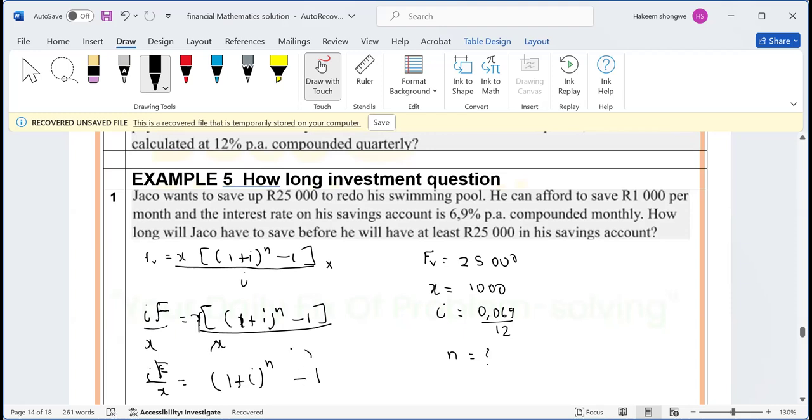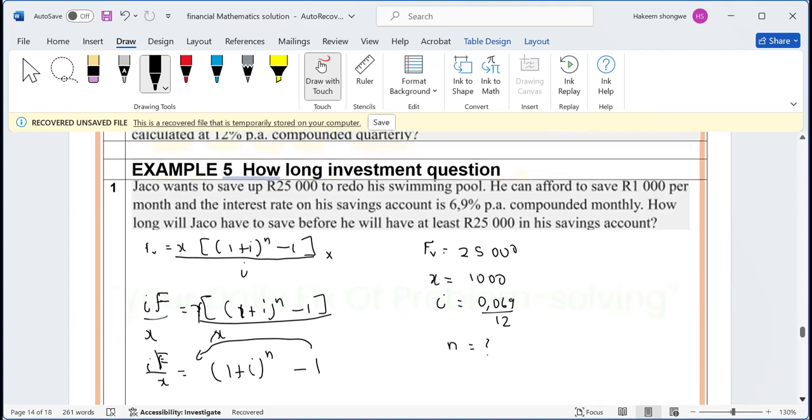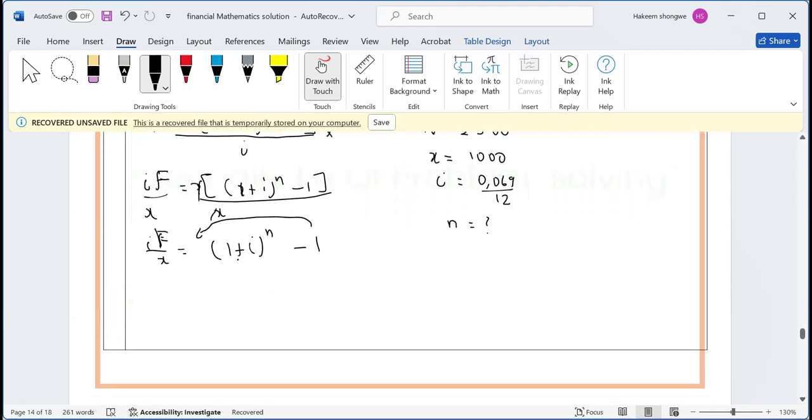What do we do after that? We take 1 to the other side. I'm going to write this one on the left hand side. I'm taking this one to the other side. So I'm going to have (1 + i) to the power of N equals (iF)/X plus 1. It was negative, when it gets to that side it becomes positive.